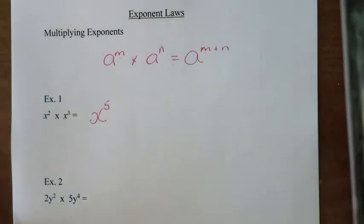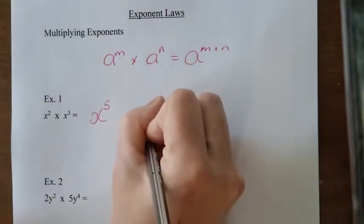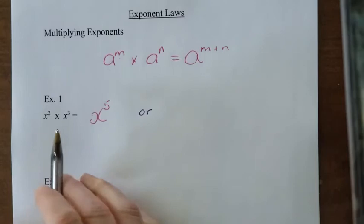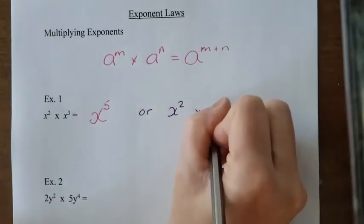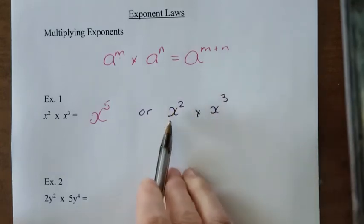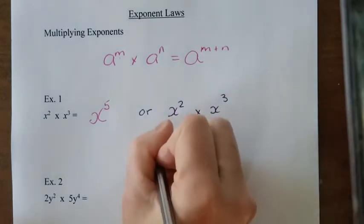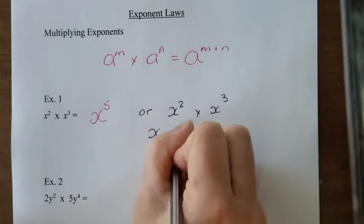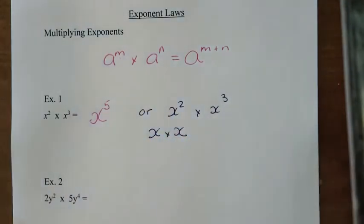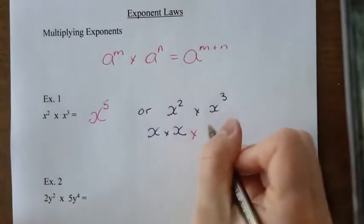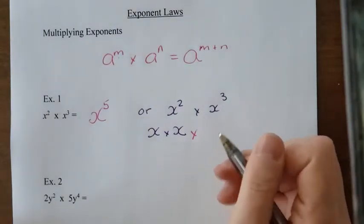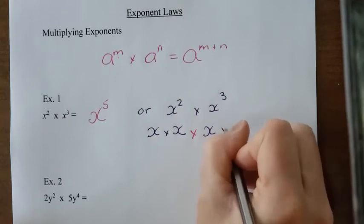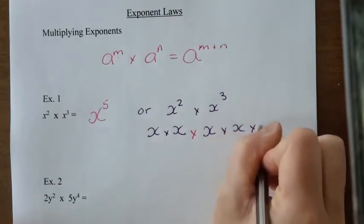There is another way to do this, which might make a little more sense, but it's a little longer. So if we have x squared times x to the power of 3, x squared is the same thing as saying x times x. So we have x times x. Then this multiplication, I'm just going to change colors. x to the power of 3 is the same as saying x times x times x. So it's x times itself 3 times.